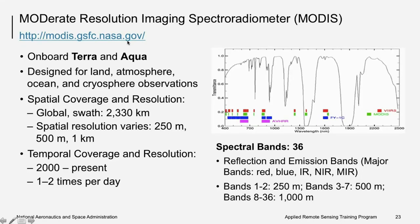MODIS has 36 bands designed to observe the atmosphere, ocean, and land. Bands 8 to 15, in the optical blue, red, near-infrared, and medium infrared range, are used for water quality parameters — especially chlorophyll-a concentration. MODIS has a wide swath of 2,330 km. Spatial resolution varies from 250 meters to 1 kilometer by band, but for HAB detection the resolution is 1 kilometer. Data are available since 2002.